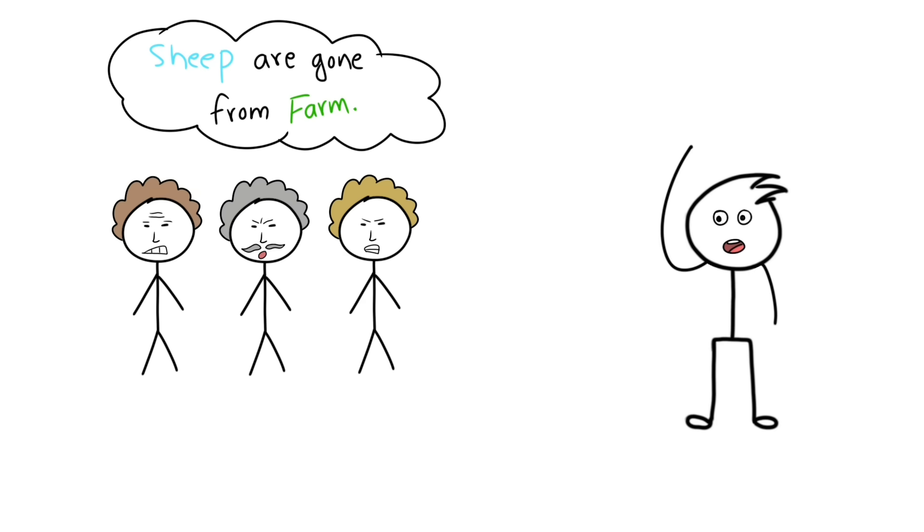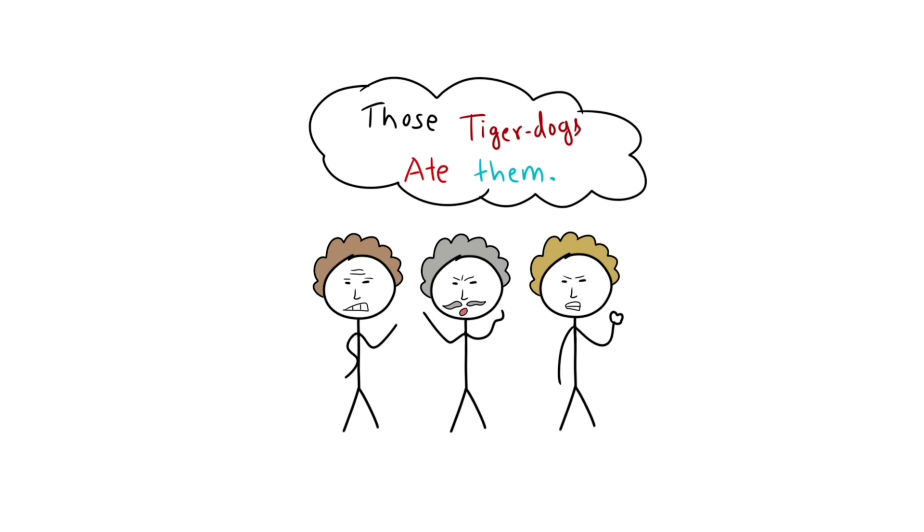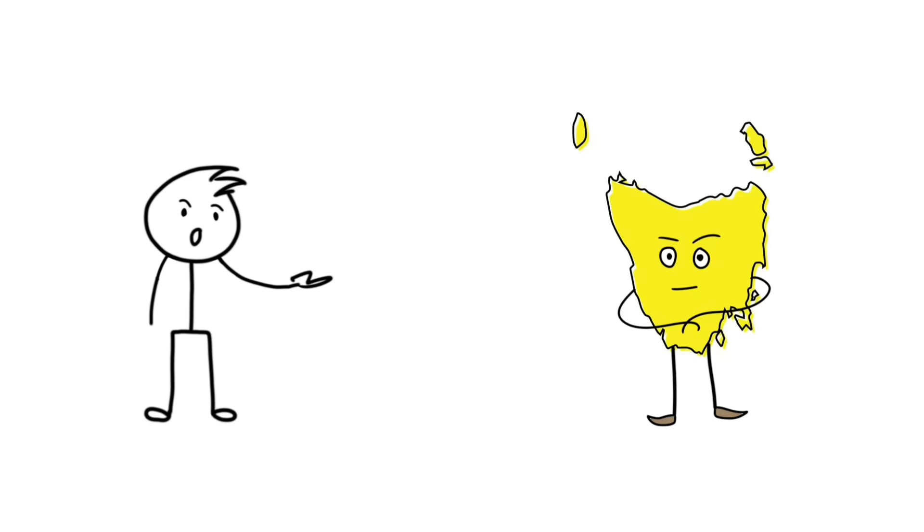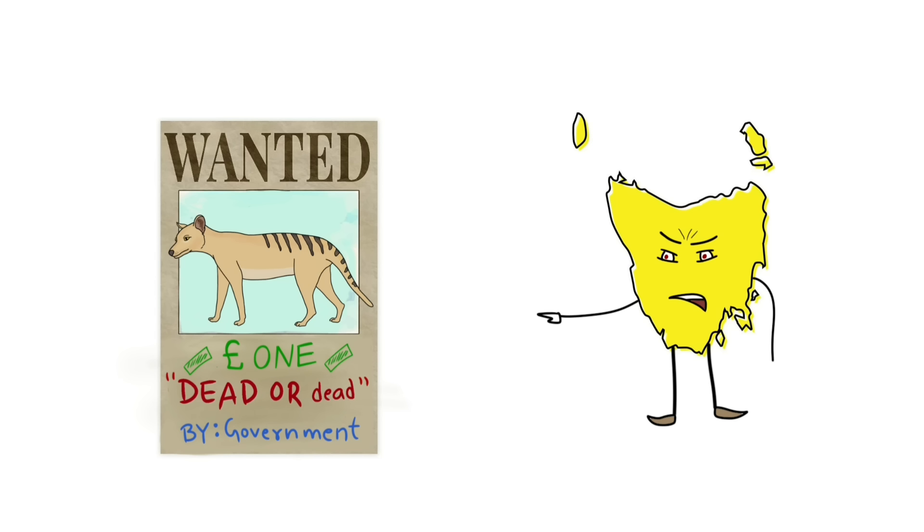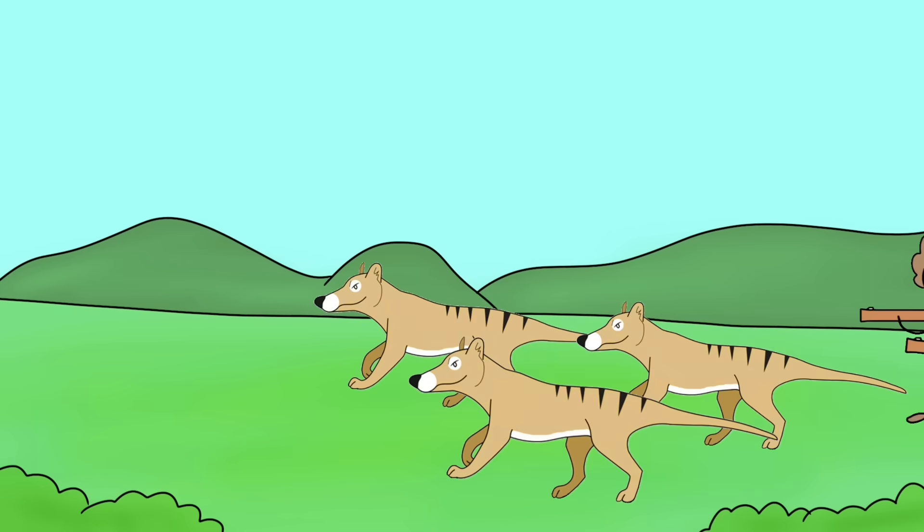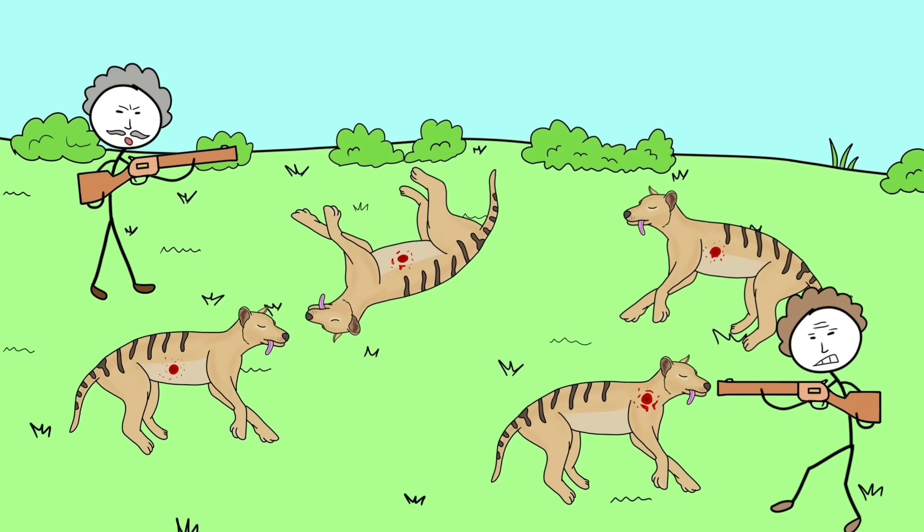After some time, some farmers noticed the disappearance of their cattle. A few of the sheep were missing from the farm. They instantly blamed Tasmanian tigers for that problem. They even said more sheep than total were missing, and reported it to the authority. The Tasmanian government placed one pound bounty for each thylacine without any proof or research. Then, the mass hunting started. They killed thousands of thylacines and brought them to the brink of extinction.